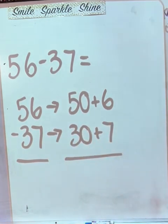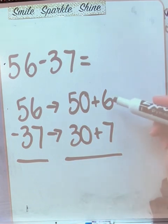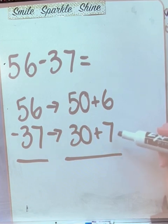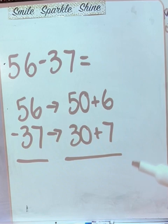Now in subtraction, we always have to start in the ones, right? Just in case we have to regroup. Let's see. Can we do 6 minus 7? No, we cannot take away 7 ones from 6 ones. That's impossible. So what do we do? How do we regroup in expanded form?